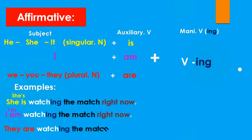Another example: 'They are watching the match right now.' We can contract 'they are' to 'they're' — 'They're watching the match right now.' Okay guys, now let's move to the question form.